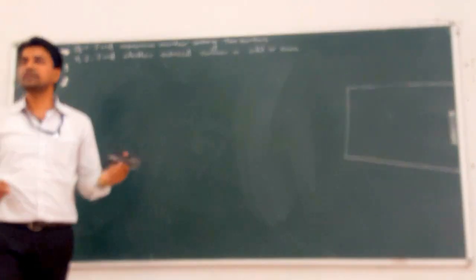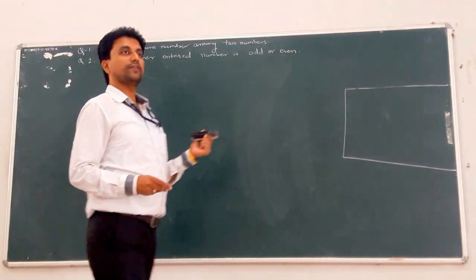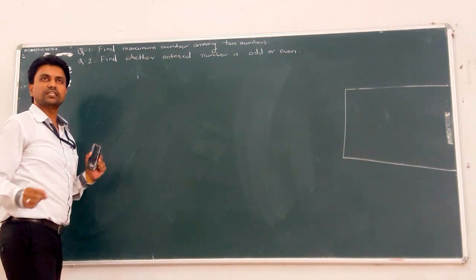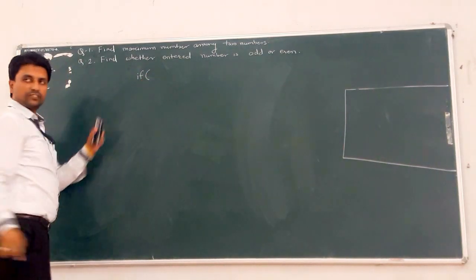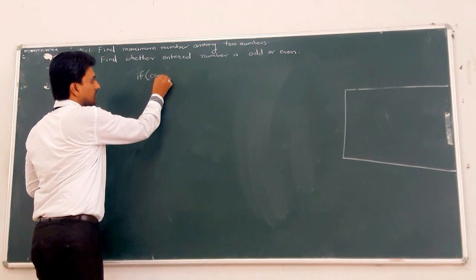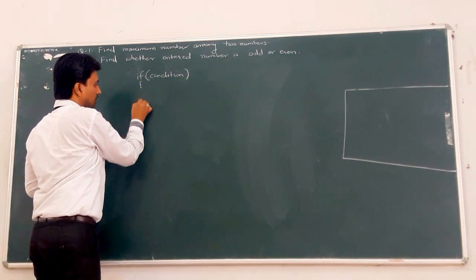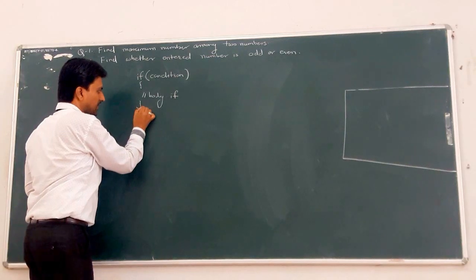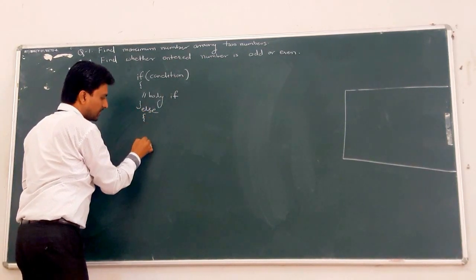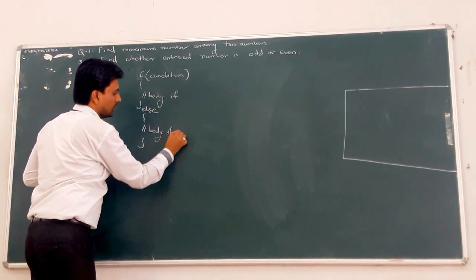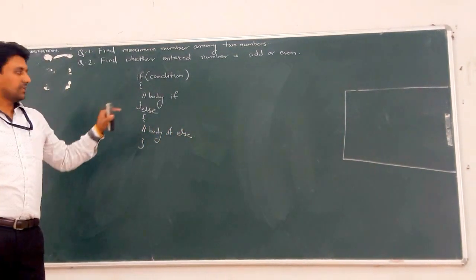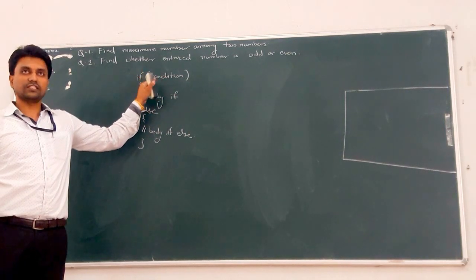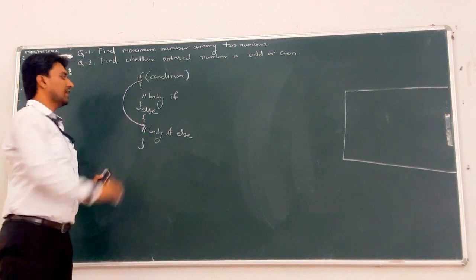We will start with the next point in control statements, that is the if-else statement. First is the syntax: what is the syntax of if-else? Write 'if' in small letters, then the condition, then the body of if, and after the closing curly bracket write 'else'. After that, the body of else. In the else statement there is no condition, because if the condition of the if statement is false, the cursor automatically goes to the else statement.